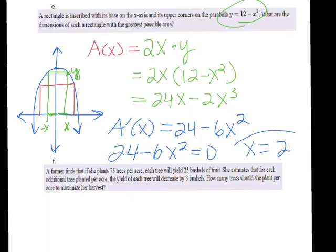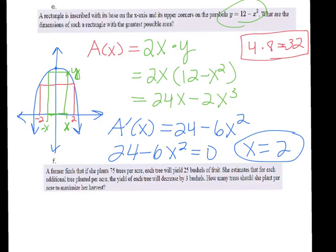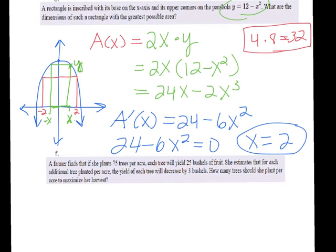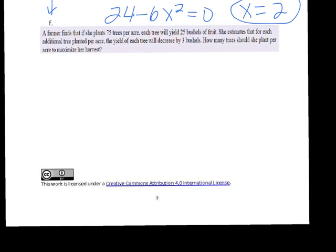Taking the derivative: A'(x) = 24 − 6x². Setting equal to zero gives x = 2 (and x = −2, discarded). The total width is 4 and height is 12 − 4 = 8, giving a maximum area of 4 × 8 = 32.